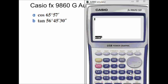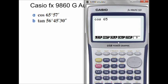I'm going to work out the cosine of 65 degrees 57 minutes, so I'm going to enter cosine 65. Now, how do you enter your degrees, minutes and seconds? You go to option and across the top here.